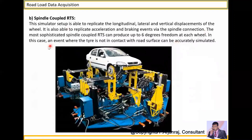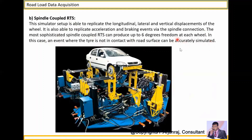The spindle coupled RTS is the most sophisticated type and can produce up to 6 degrees of freedom at each wheel. Even in events where the tire is not in contact with the road surface, it can be accurately simulated, which also helps for simulation purposes.